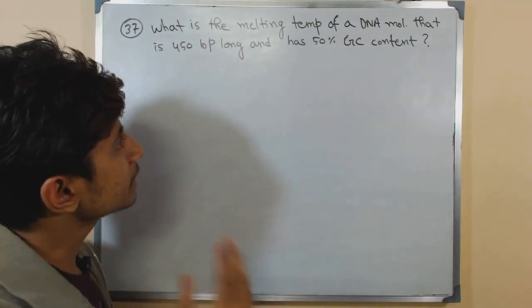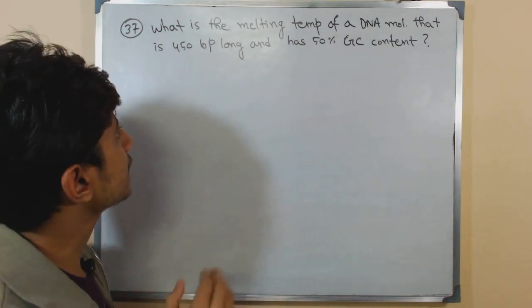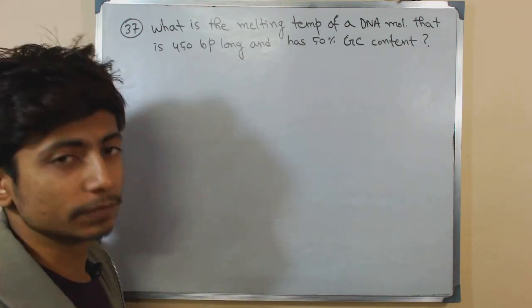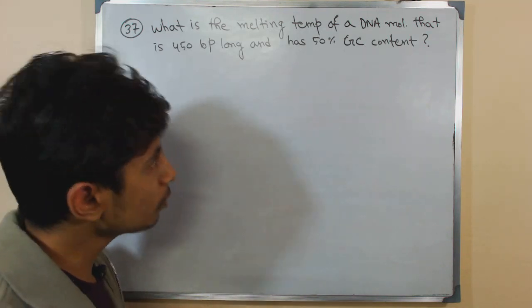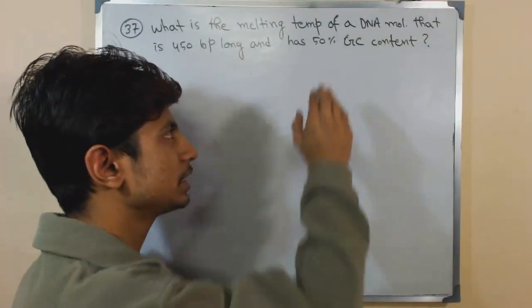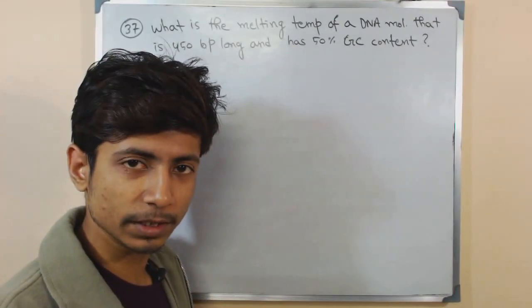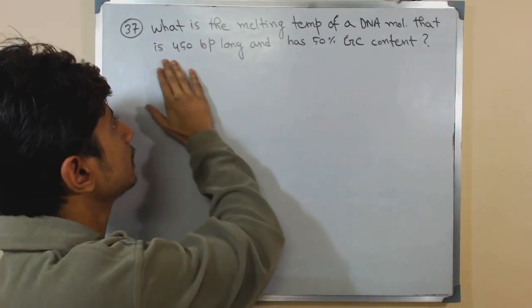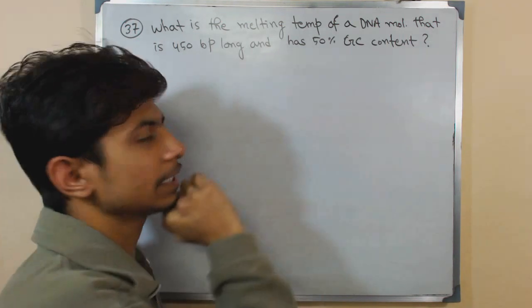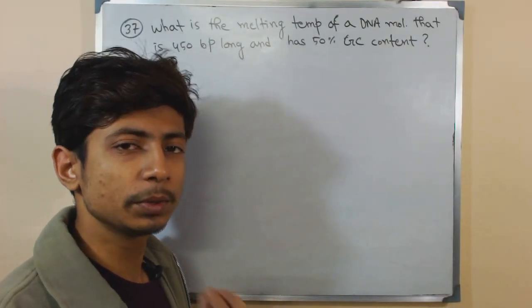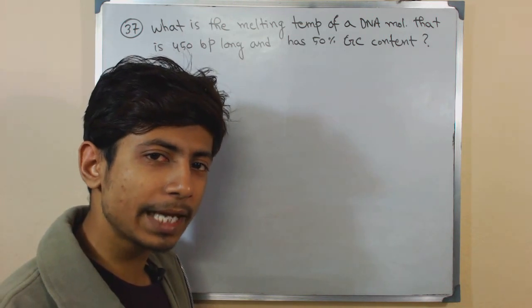What is the melting temperature of a DNA molecule that is 450 base pairs long and has 50% GC content? It's easy to calculate the melting temperature when they provide the GC and AT of the total base pairs, or if they provide the length of the DNA and the percentage GC content, because you can use a simple formula to calculate that.